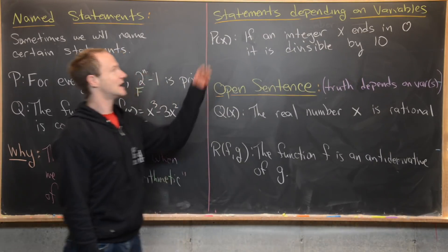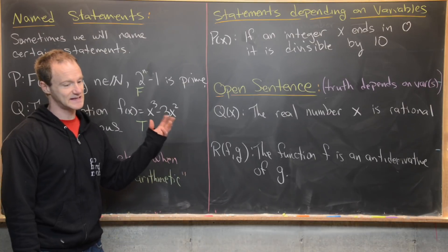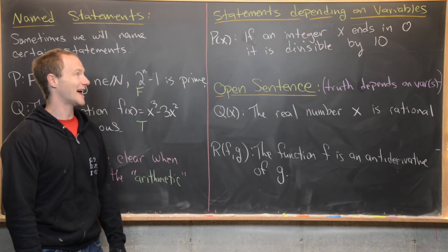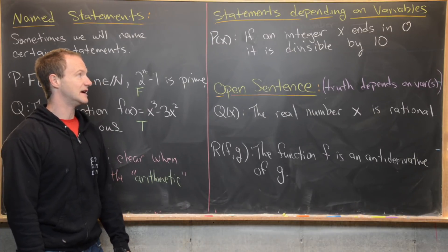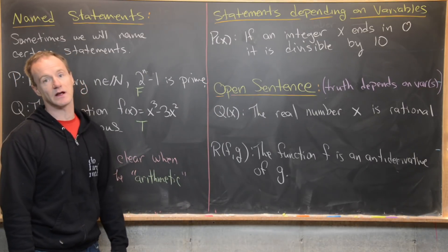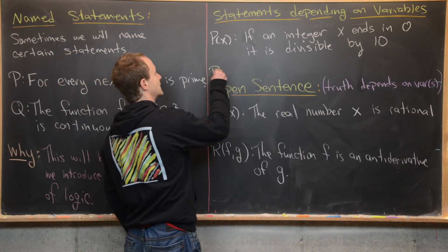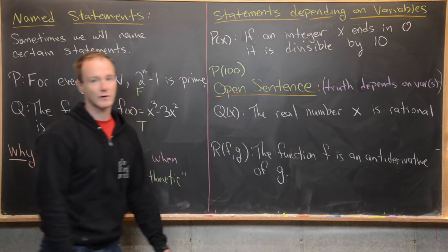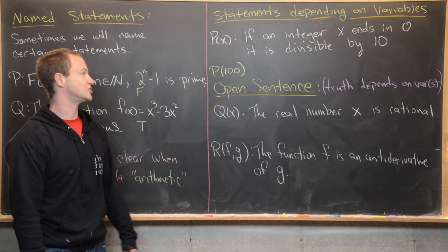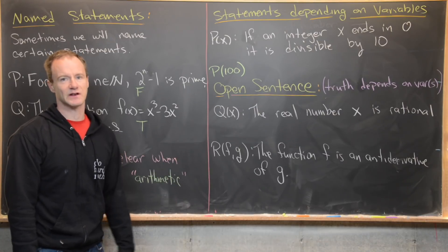Now sometimes statements are going to depend on variables like this one right here, P of x. That's a statement P which depends on an input x. It says if an integer x ends in zero, then it is divisible by 10. Notice this is true regardless of which x we plug in there. If we plug in 100, the statement P of 100 reads: if the integer 100 ends in zero, then it is divisible by 10. That's most definitely a true statement.